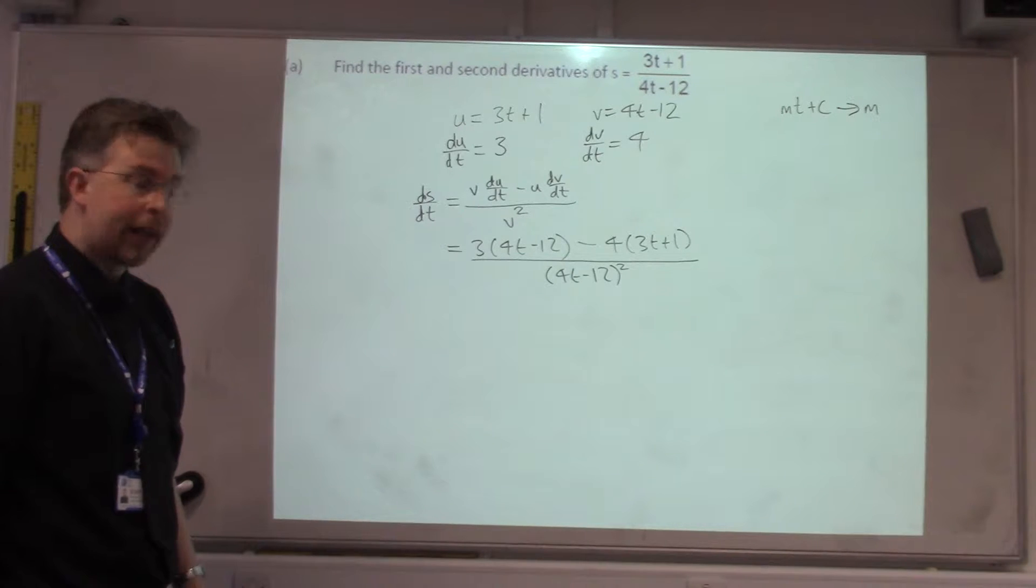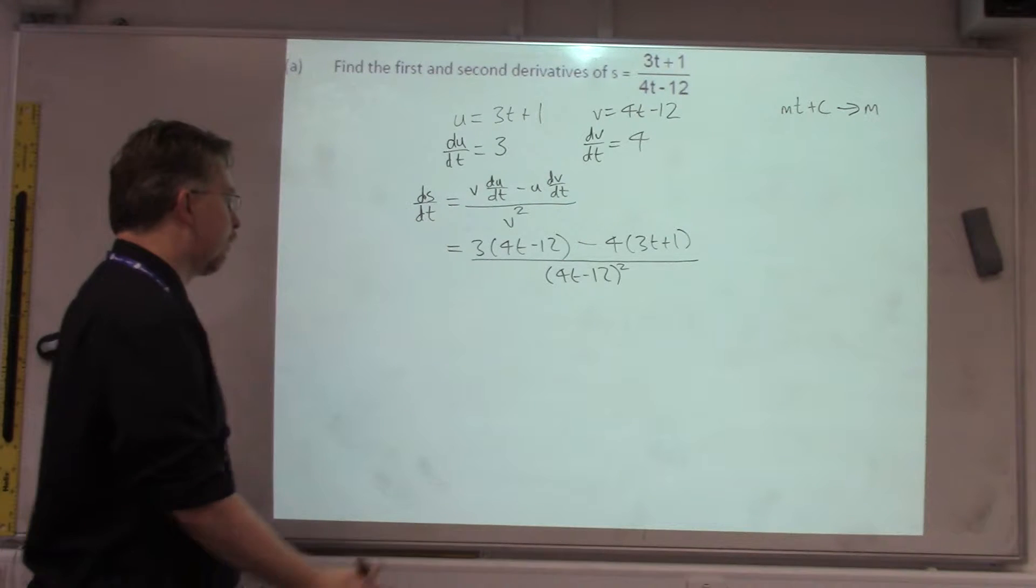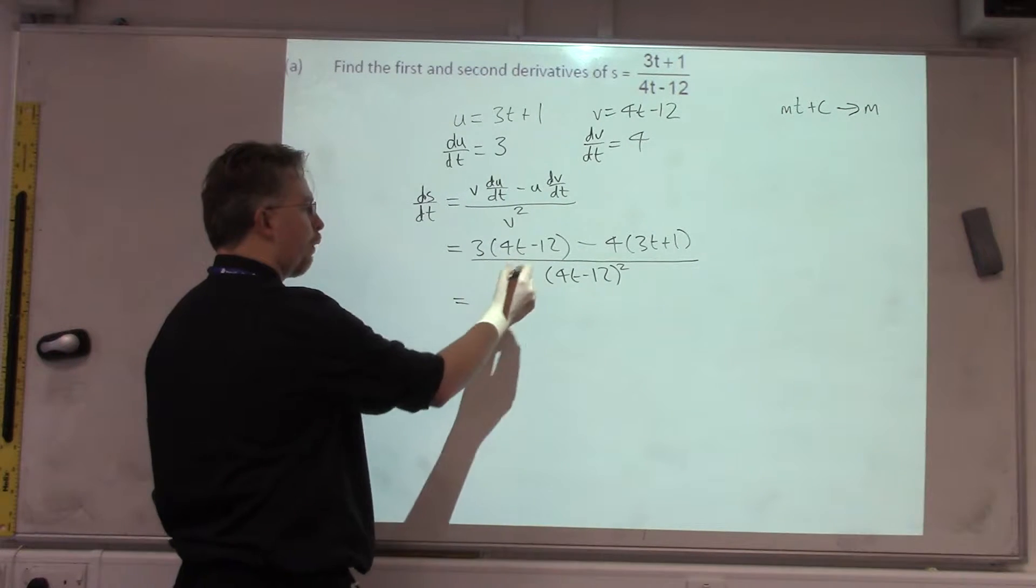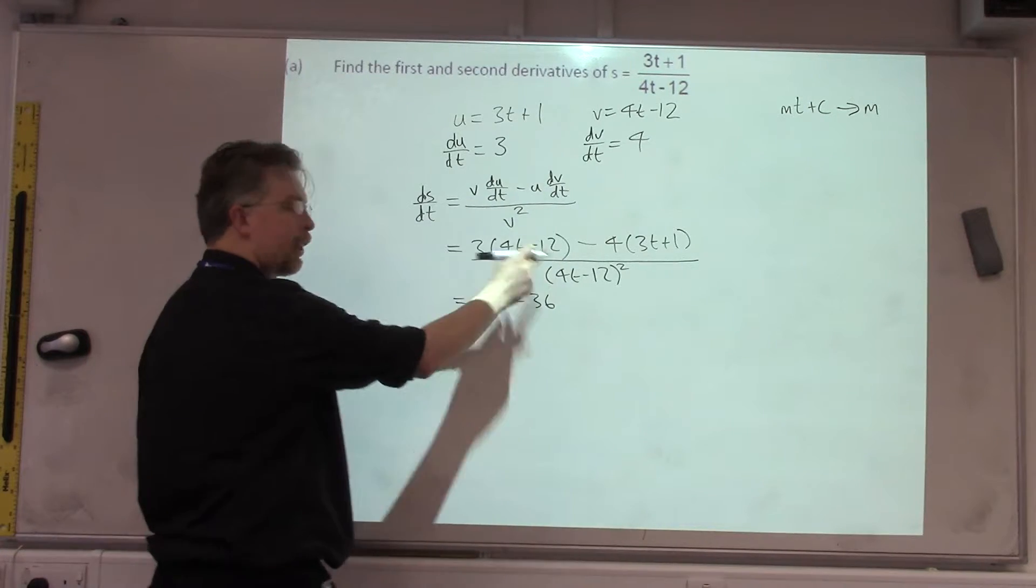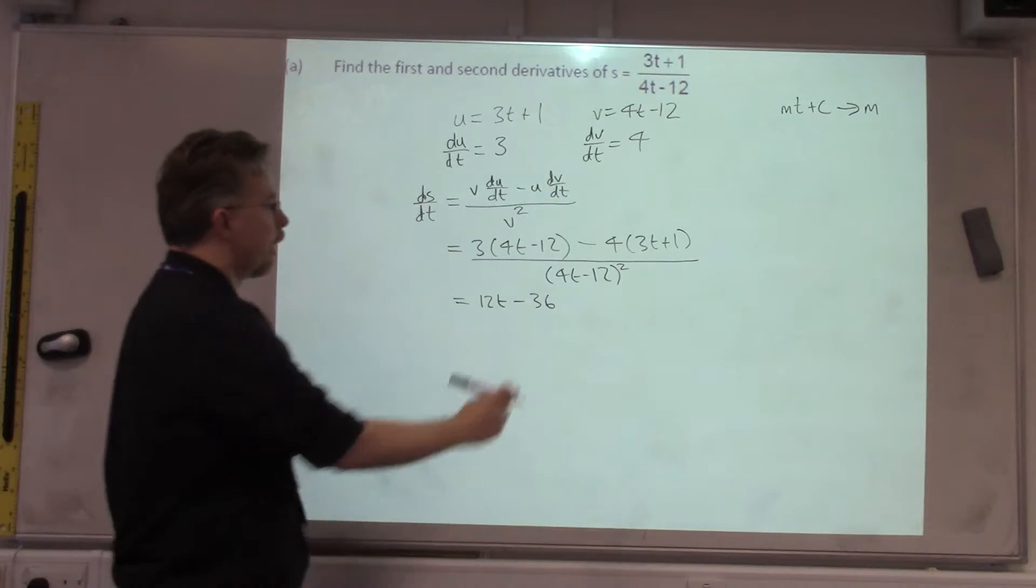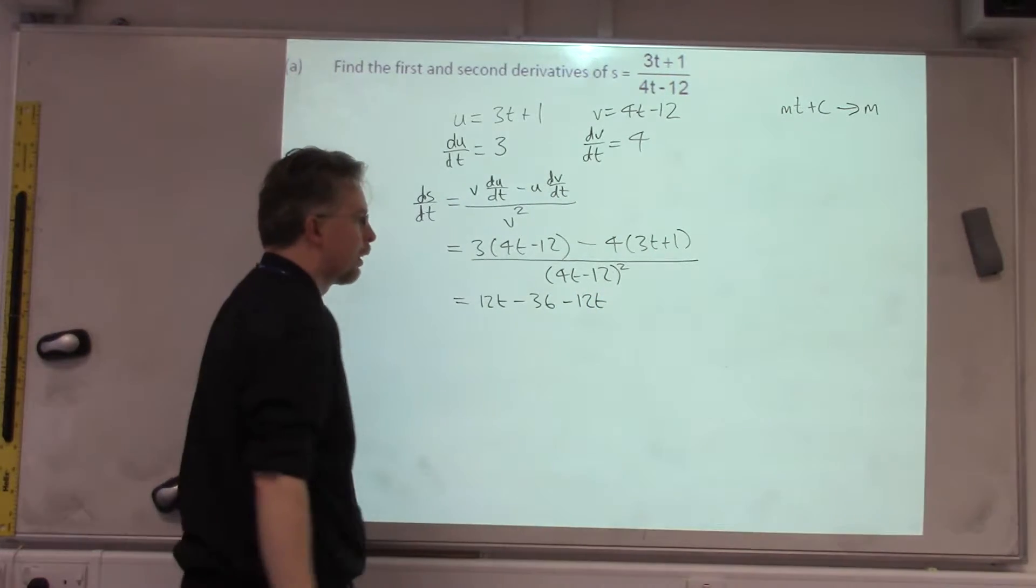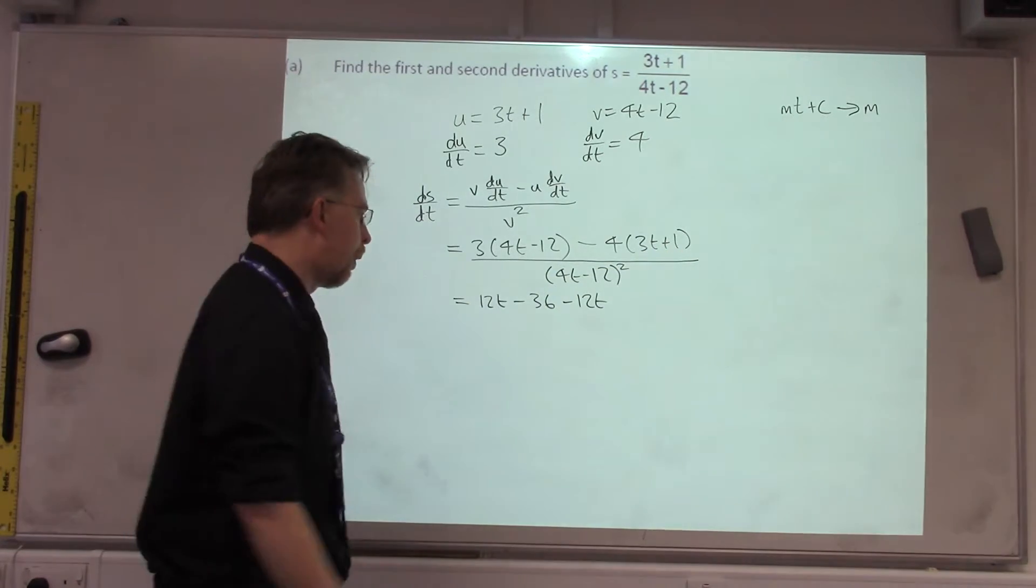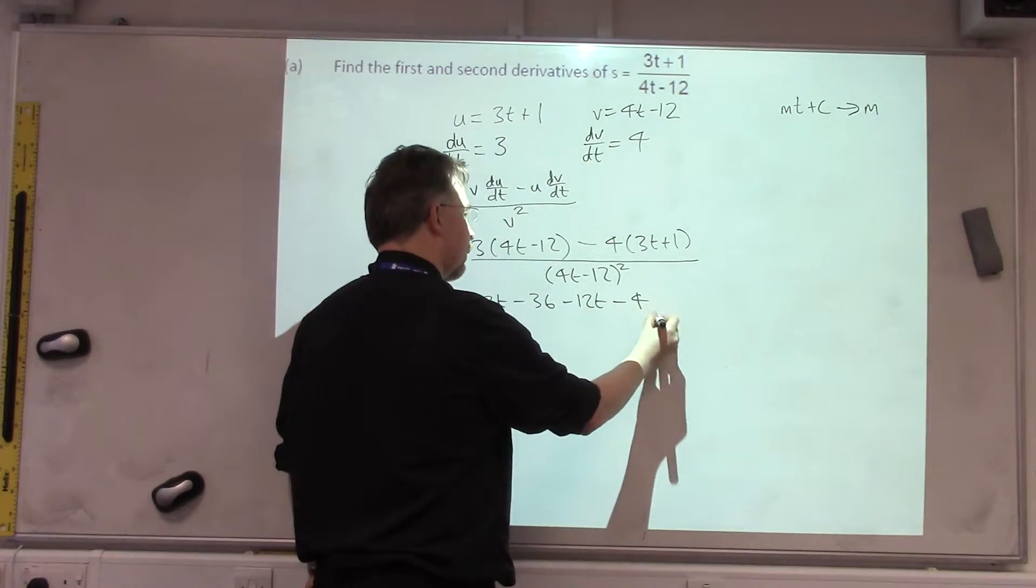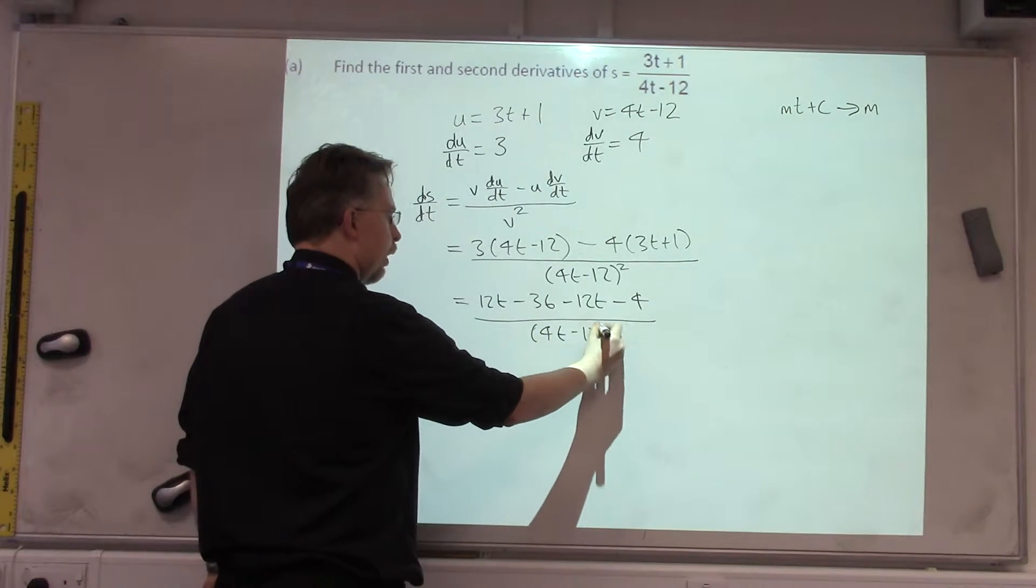So, we need to put in brackets to square it. Then, we simplify. We'll need to simplify in order to do the second derivative. So, 3 times 4, so we've got 12T minus 36, multiplying out those brackets. Minus 4 times 3T is minus 12T. Minus 4 times plus 1 is minus 4.